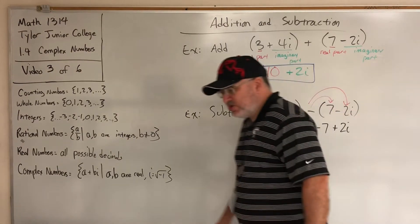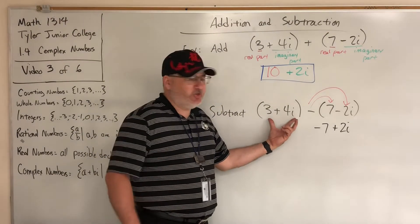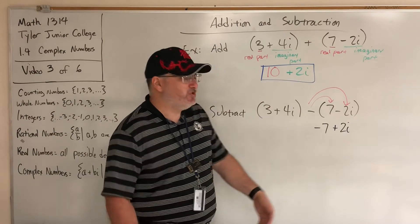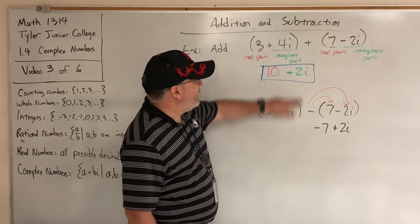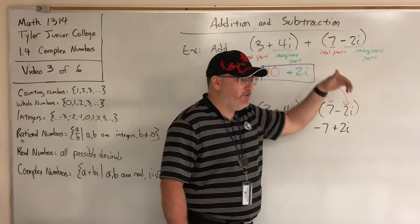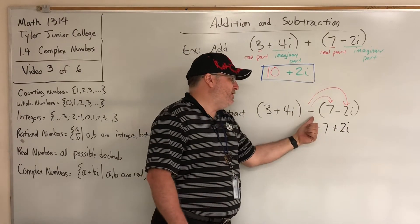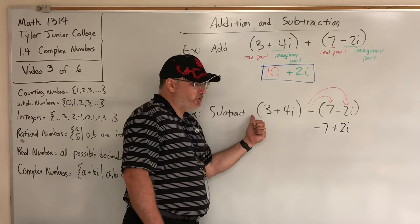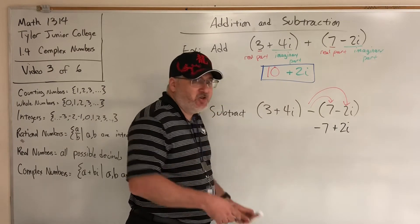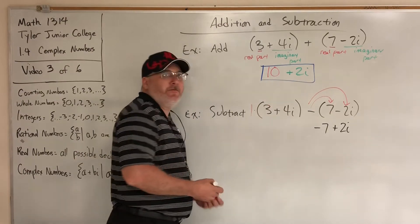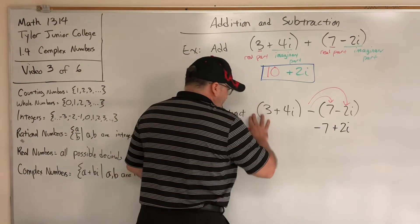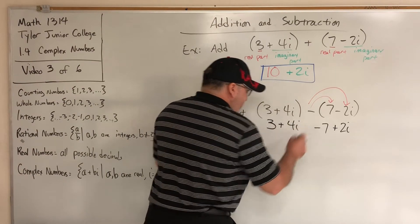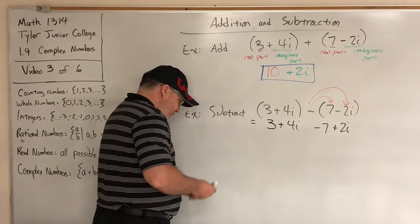The first set of parentheses is really unnecessary — there's nothing in front of it requiring distribution. Sure, there's always an implied 1 multiplied in front, but one times anything is itself, so there's nothing to do. We can simply drop those first parentheses. Now, just like addition, it's time to combine like terms.